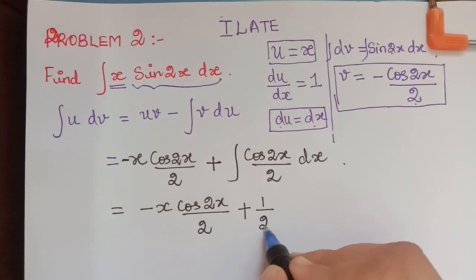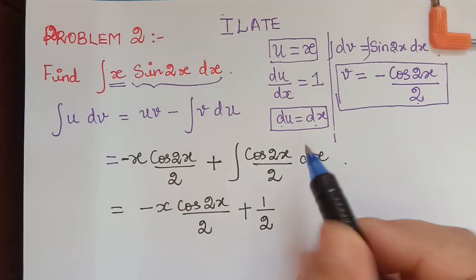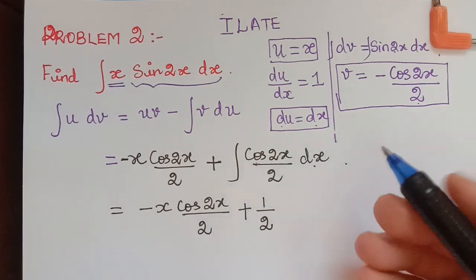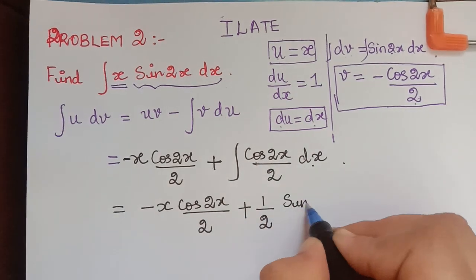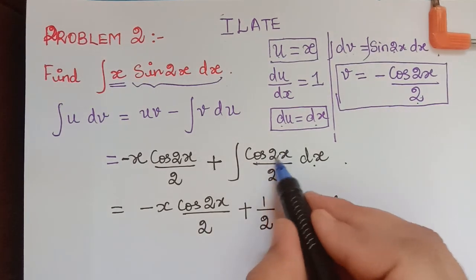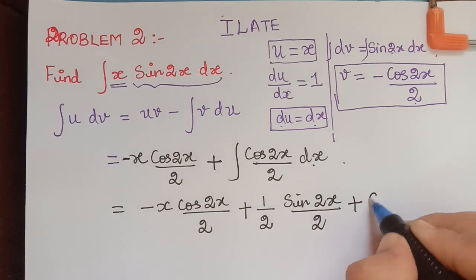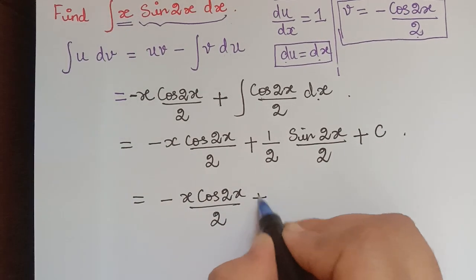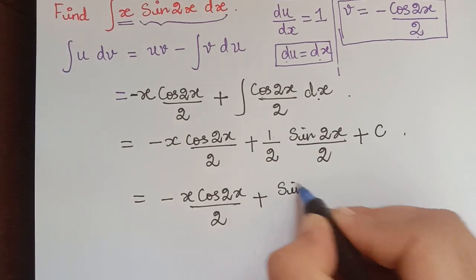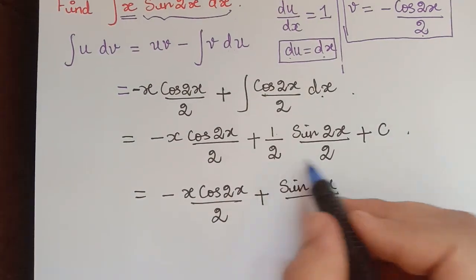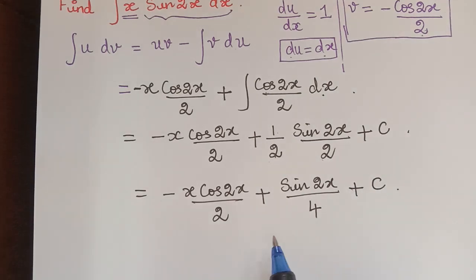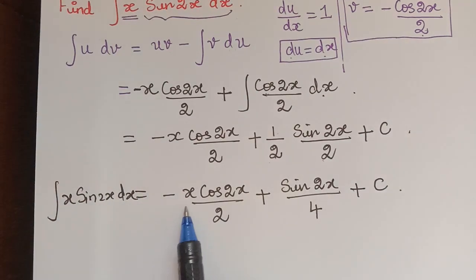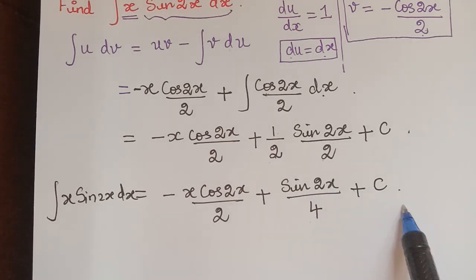This equals minus x cos 2x divided by 2, plus the 2 in the denominator is a constant which can be taken out as 1/2, and the integral of cos 2x dx. The integration of cos 2x is sin 2x divided by 2, plus c. Simplifying, we get minus x cos 2x divided by 2 plus sin 2x divided by 4 plus c. So this is the answer.